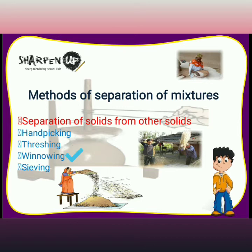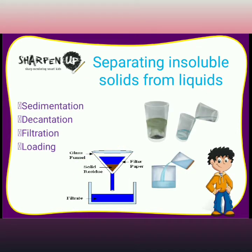Next is winnowing: the process of separating lighter components of a mixture from the heavier ones with the force of wind. This is known as winnowing. And the last is sieving: this method is used to separate the components of mixtures which differ in size. The size of the holes in the sieve depends on the size of the components to be separated.